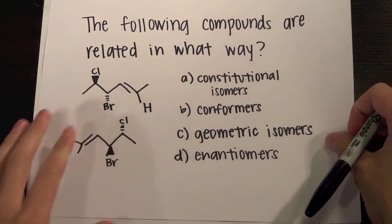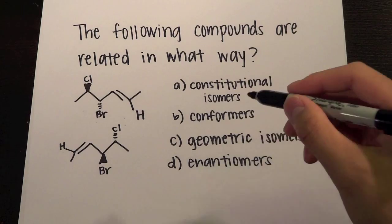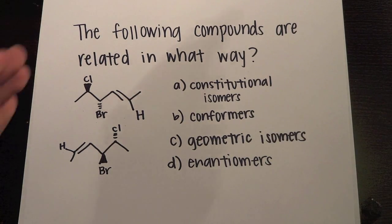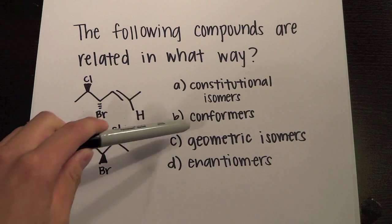So if we look back at our question, we see that the answers are constitutional, conformers, geometric, and enantiomers. And we know that one is E, one is Z, so this would actually be geometric isomers.